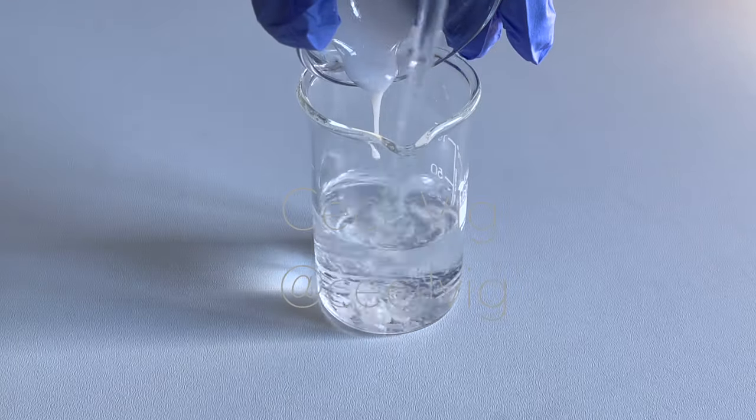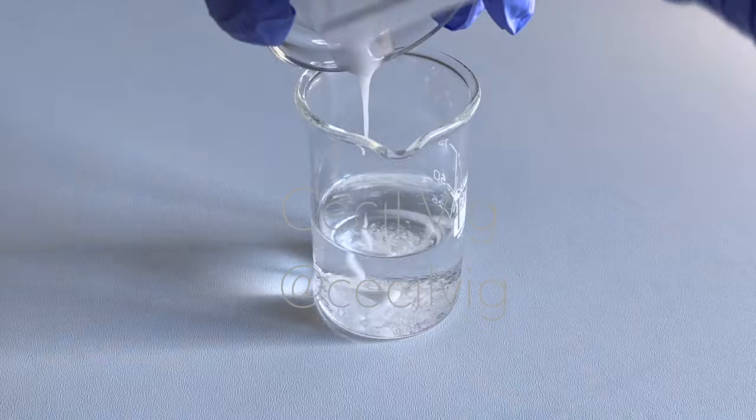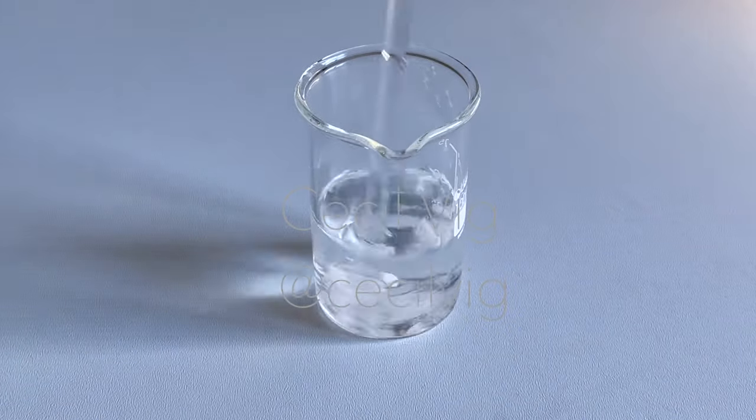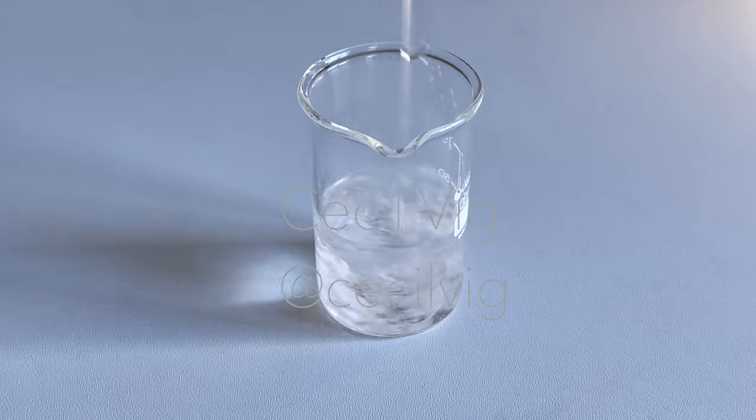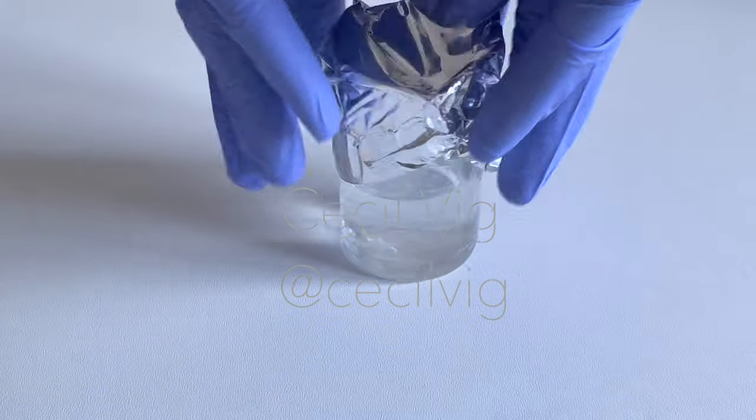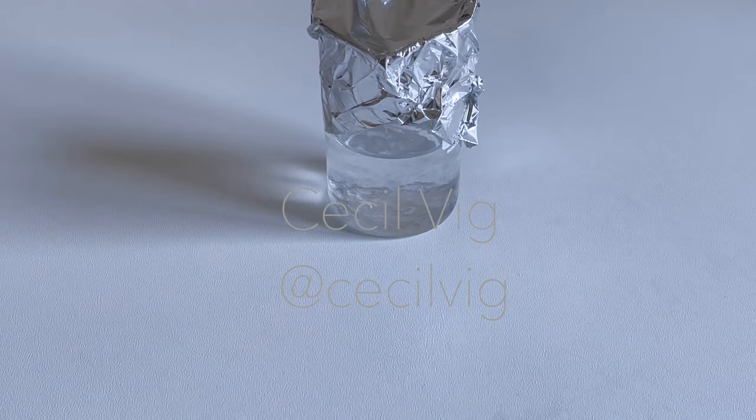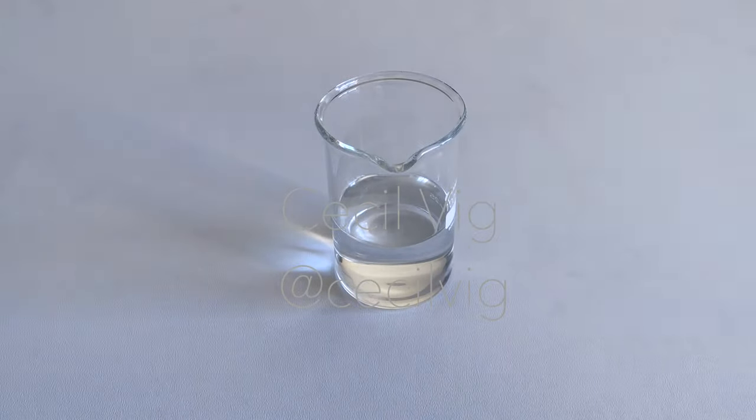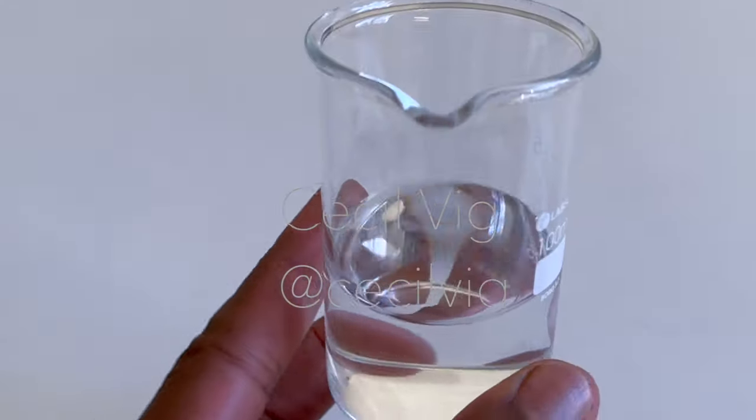When the vegetable glycerin and the hyaluronic acid mixture are well blended, add the mixture to the rest of the ingredients in the beaker and mix well. After mixing for about two minutes, I cover the beaker with aluminum foil and set aside for about five hours to allow the hyaluronic acid to fully dissolve. After five hours, this is what my serum looks like. The hyaluronic acid has dissolved.